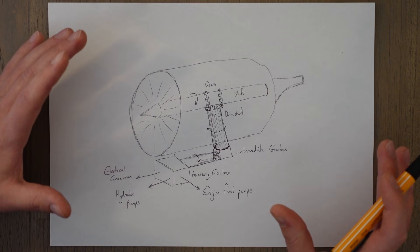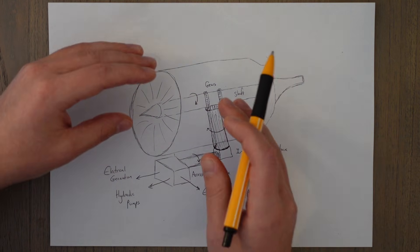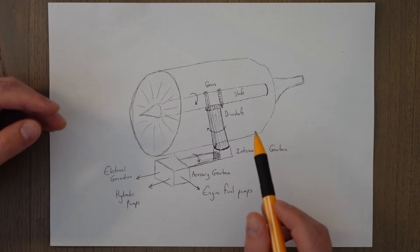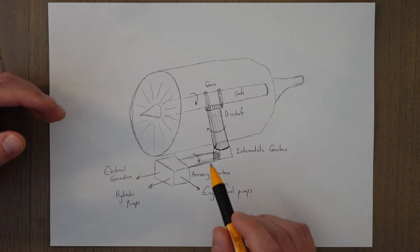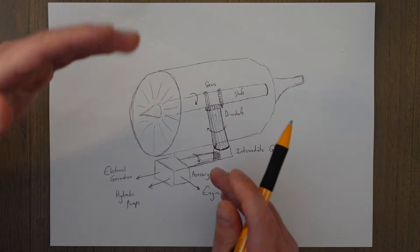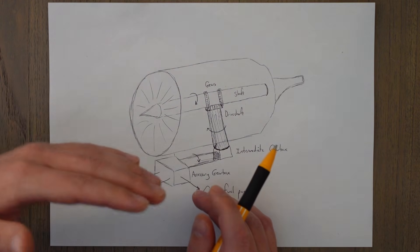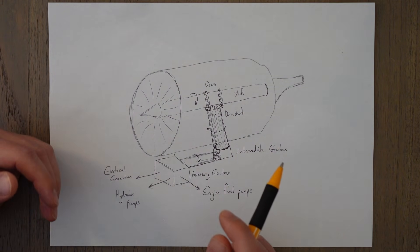Basically, the accessory gearbox is just the method of taking power away from the engine and redirecting it towards other systems, as well as that bleed system. So there's basically two ways of drawing power from the engine: either use the bleed or the accessory gearbox.